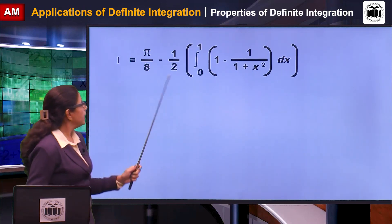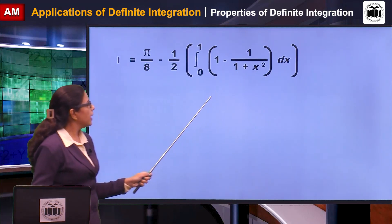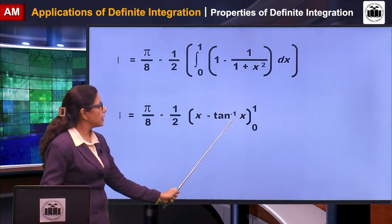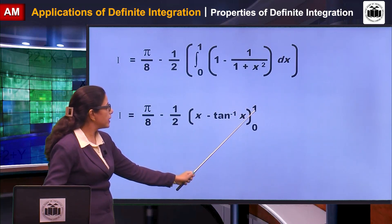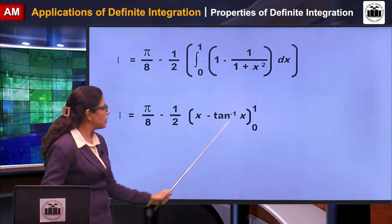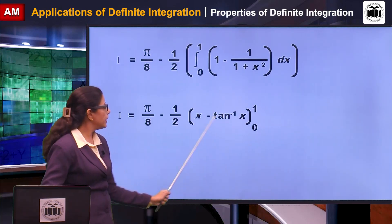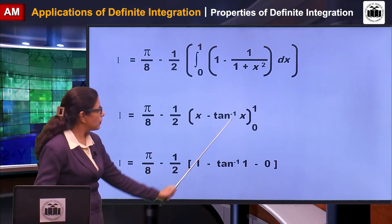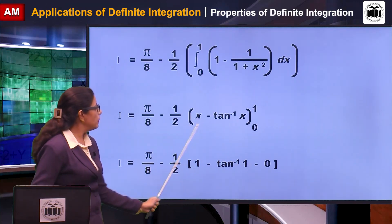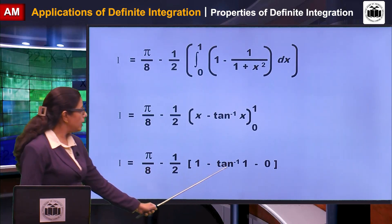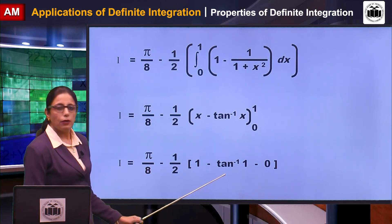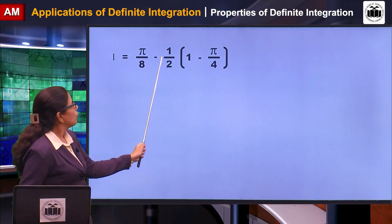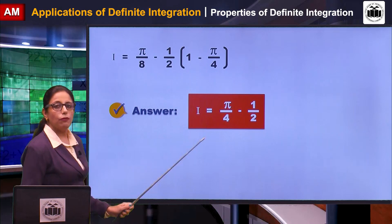The first part simplifies to π/8. The second part: (1/2)·∫₀¹ [1 − 1/(1+x²)] dx. Integrating gives (1/2)·[x − tan⁻¹x] from 0 to 1. Applying limits: x = 1 gives 1 − tan⁻¹(1) = 1 − π/4; x = 0 gives 0. So: π/8 − (1/2)(1 − π/4) = π/8 − 1/2 + π/8 = π/4 − 1/2.